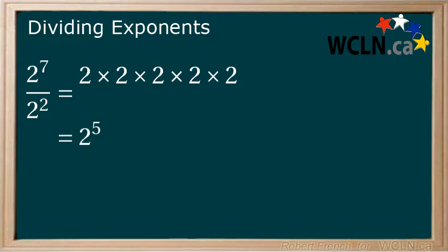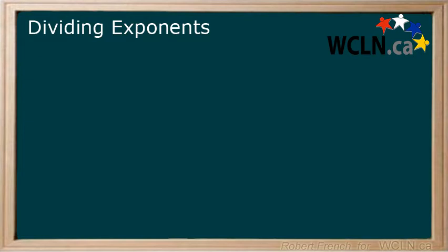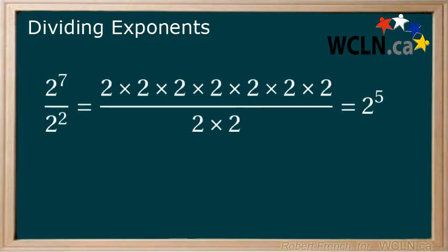Another way this can be written is 2 to the power of 7 minus 2, which equals 2 to the power of 5. Let's look at this one more time.